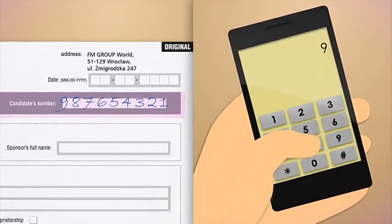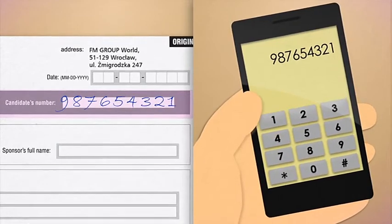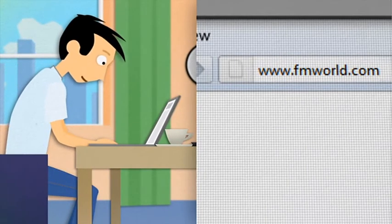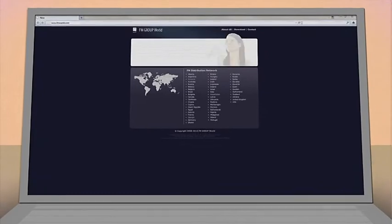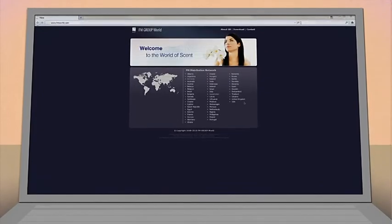We recommend that you keep this number so it is a good idea to write it down, for example, on your mobile phone. Step four, go to www.fmworld.com. The company's website, www.fmworld.com, is an invaluable source of information.